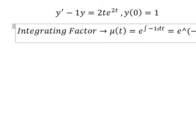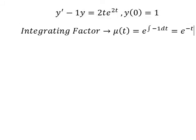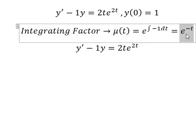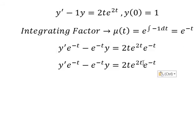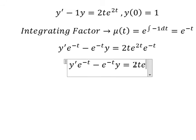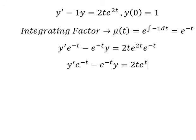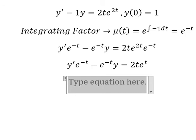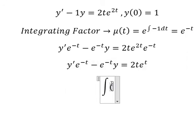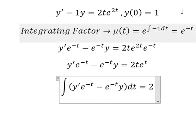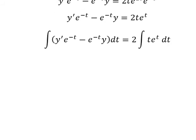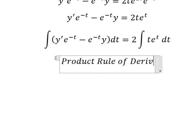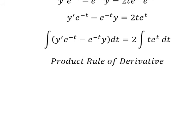This gives us e to the power of negative t. That means we multiply both sides by this integrating factor. With t and negative t, we get e to the power of negative t. Next we integrate both sides.